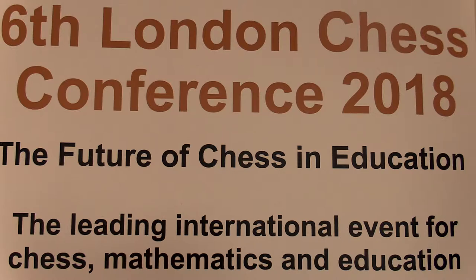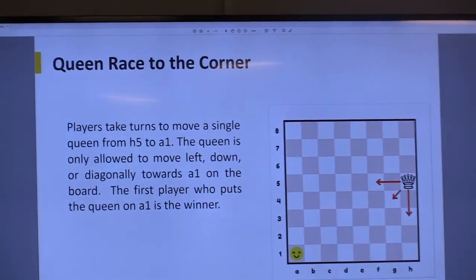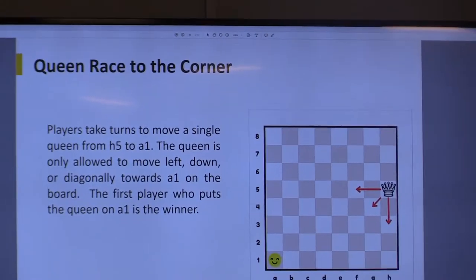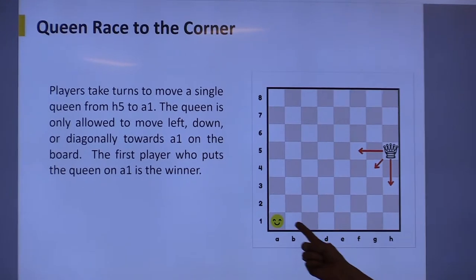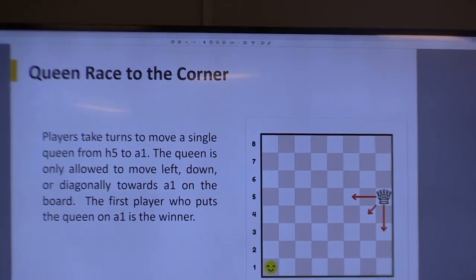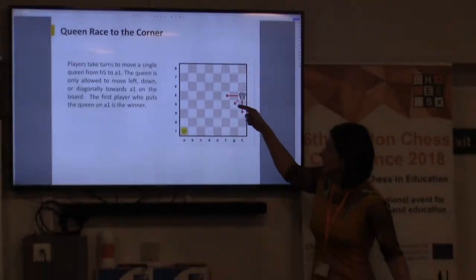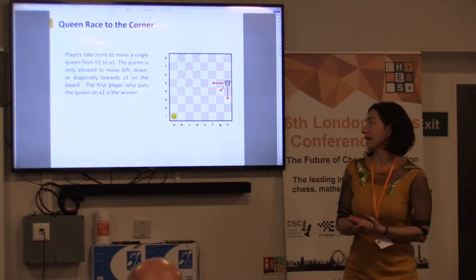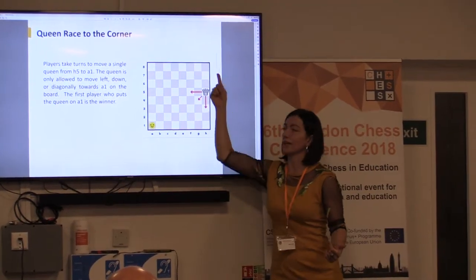Just to remind you about the game: the queen is on h5, the target square is a1, two players alternate to move the queen, and the winner is the one who gets to a1 first. You can only go towards the target, otherwise the game will never end, so you're not allowed to go right and up.